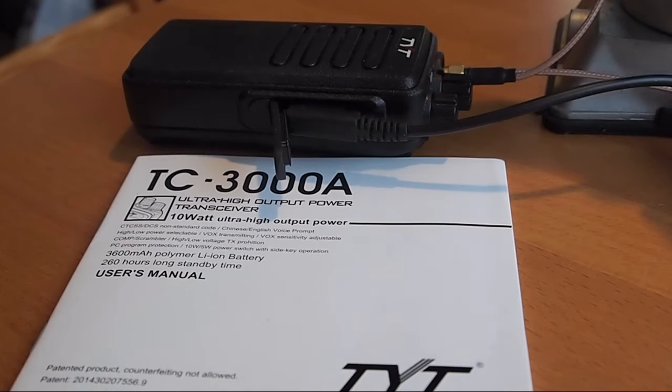Today we're going to have a look at some of the characteristics of TYT's radio, the TC-3000A. It comes in either VHF or UHF models and it has two power settings, one is 5 watts on low and the other one is nominally 9 to 10 watts.